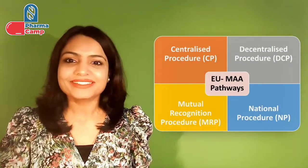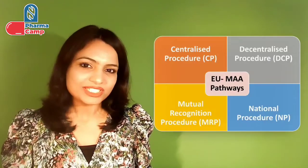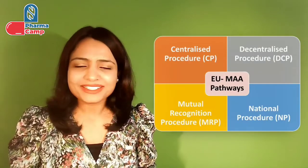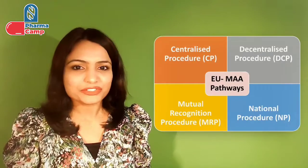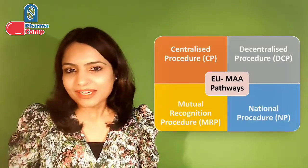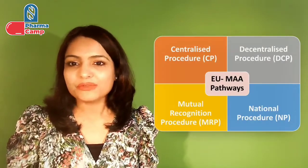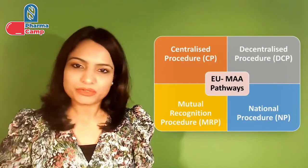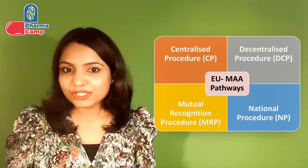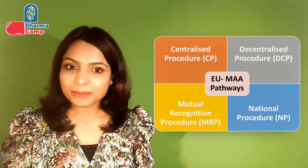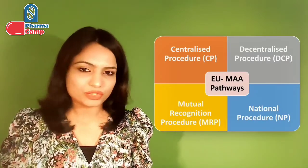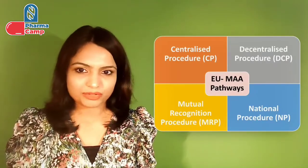The four pathways are: Centralized, Decentralized, Mutual Recognition, and National. We talked about the details and differences for each of these pathways in previous videos, and in our last video we saw the detailed timeline and procedure for the Centralized pathway. In this video, we will talk about the detailed timeline and procedure for Decentralized and Mutual Recognition Pathway.